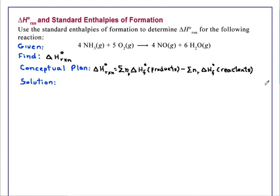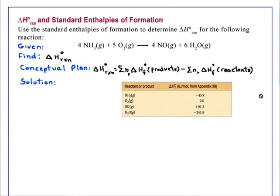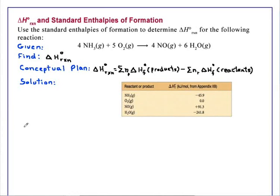We begin by looking up the standard enthalpy of formation of each of the reactants and products, noting that elements in their standard states have an enthalpy of formation of 0. Therefore, this information is frequently not found in tables of enthalpies of formation. Substituting into the above equation: